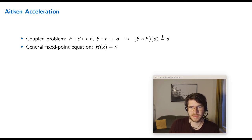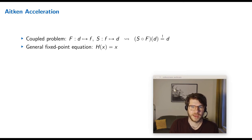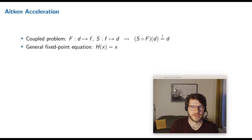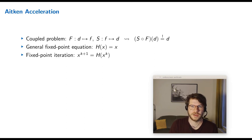The first acceleration method is Aitken under-relaxation. For that we first need to understand that coupled problems are mathematically nothing else than fixed-point equations. We have operators F and S, and what we want is to get the same displacements out that we put in. From now on I'll use the general fixed-point notation: H(x) = x. We can solve fixed-point equations by fixed-point iterations, but this only converges if H is a contraction.